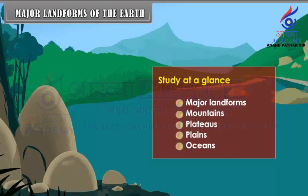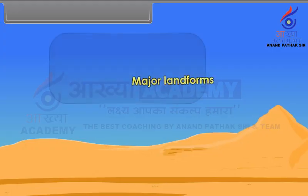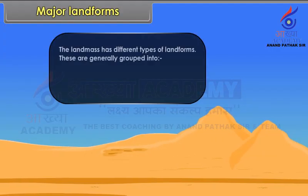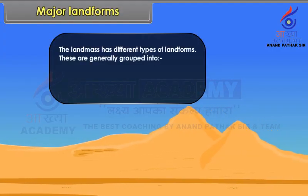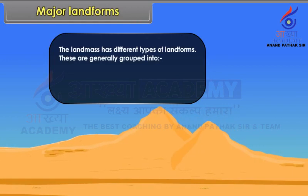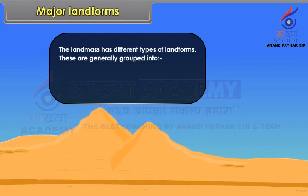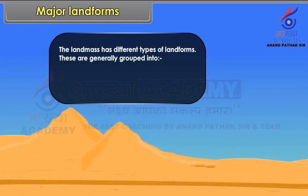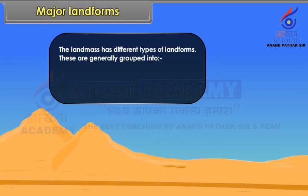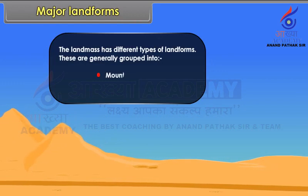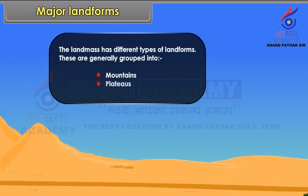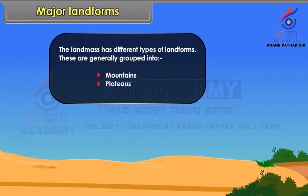Major Landforms. The landmass has different types of landforms. These are generally grouped into Mountains, Plateaus, and Plains.